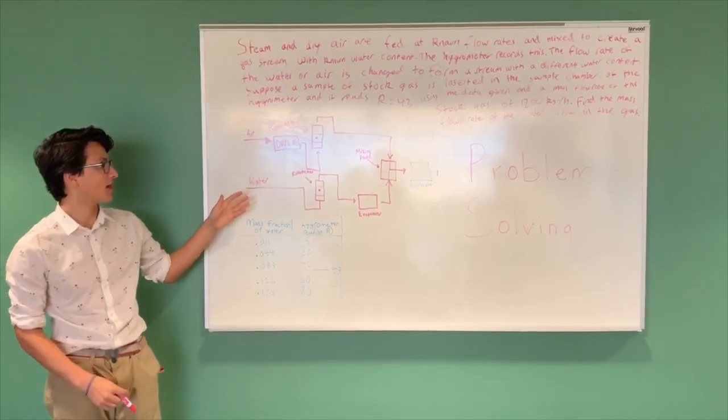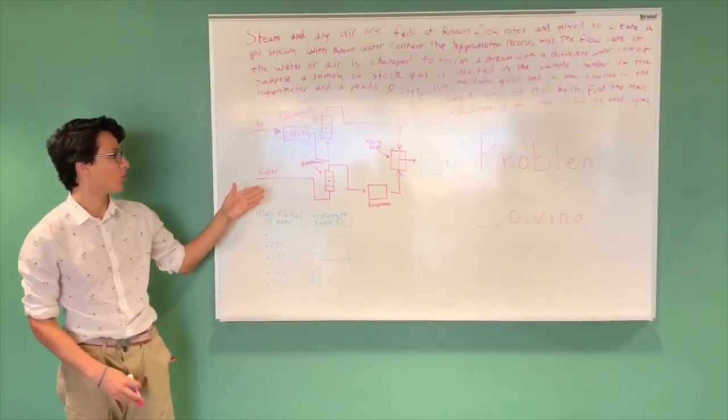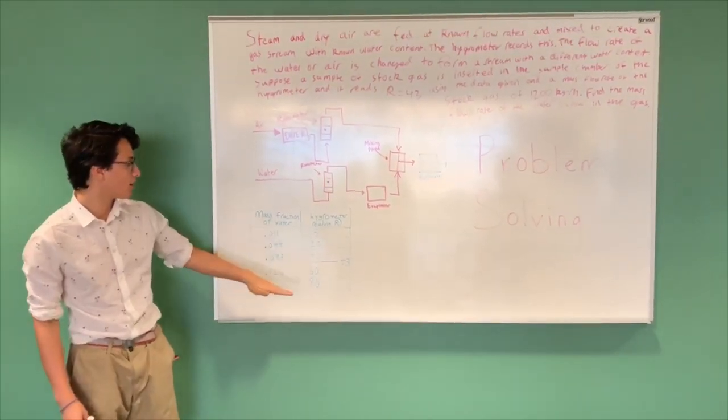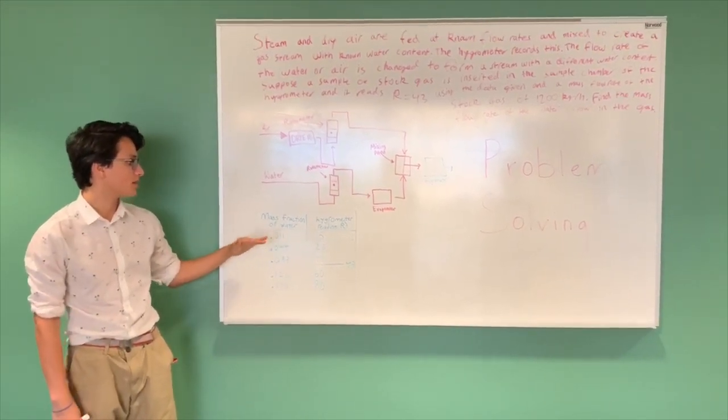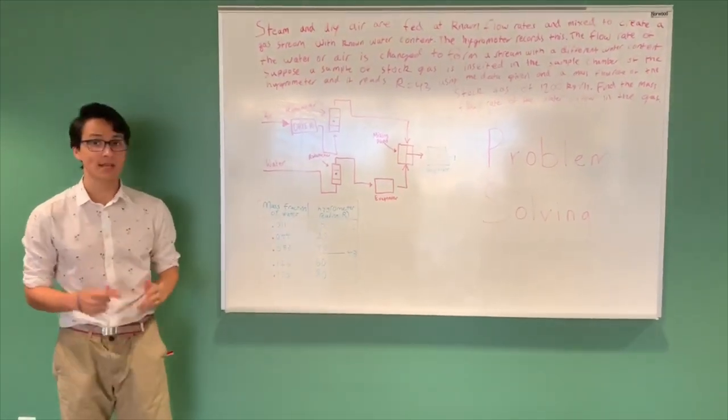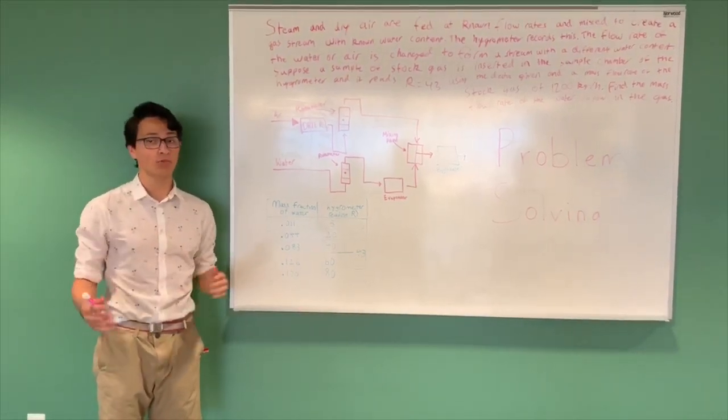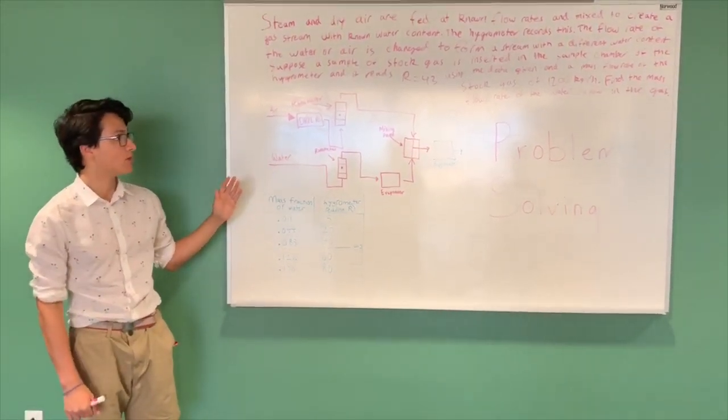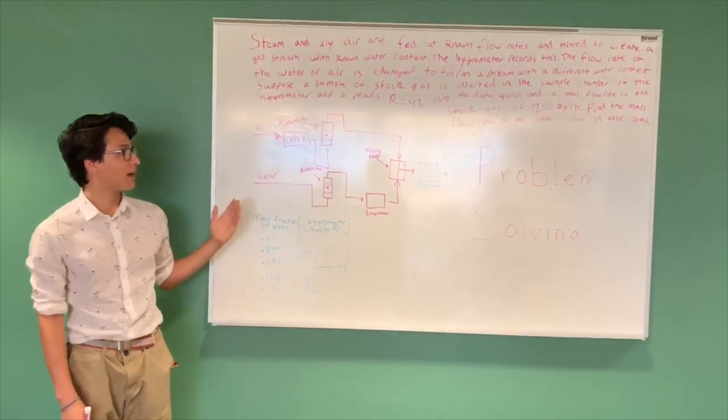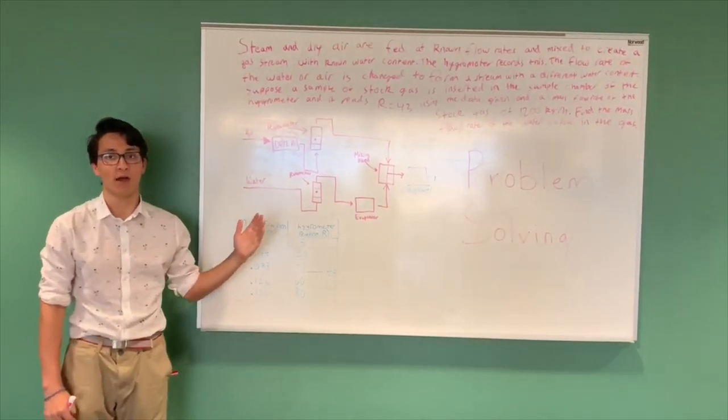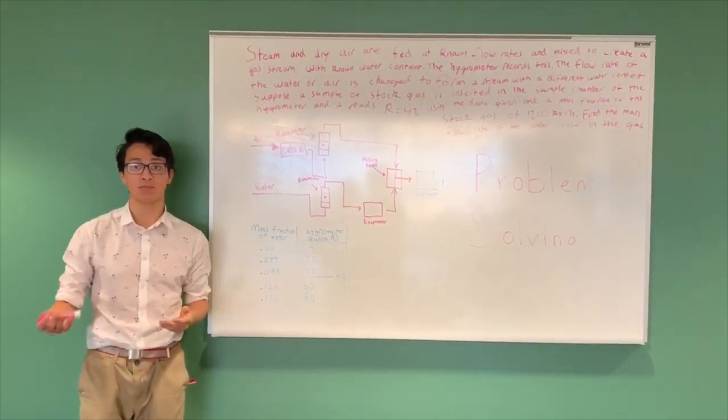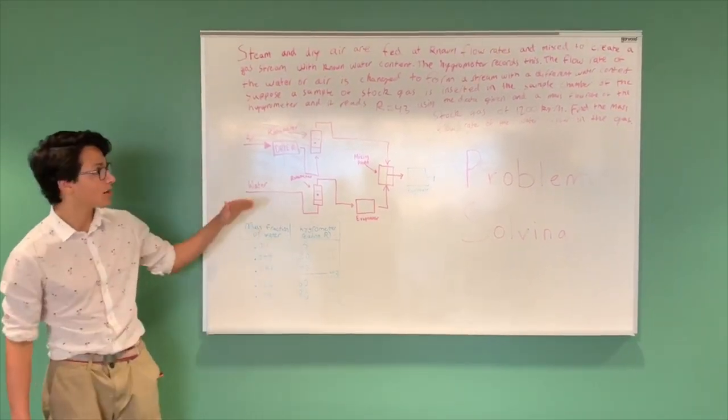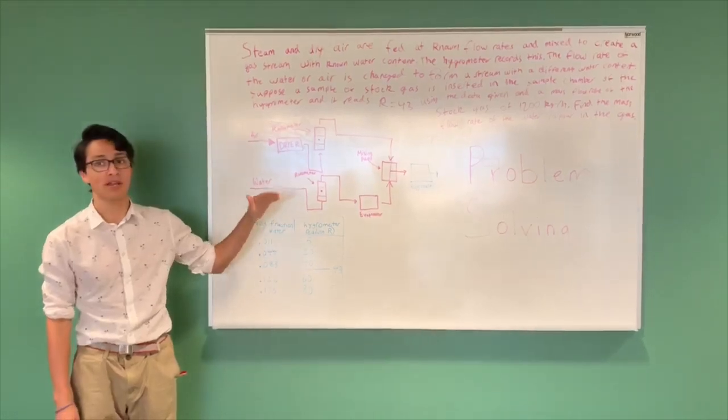Air and water are fed and mixed to create a gas stream with known water content. Right here we have a table detailing the mass fraction of the water as well as the hygrometer reading. Let's say the hygrometer reads 43 and we have a given mass flow rate of stock gas of 1200 kg per hour. Utilizing what's been given to us as well as engineering problem solving skills, we'll have to find the mass flow rate of the water vapor in the gas.